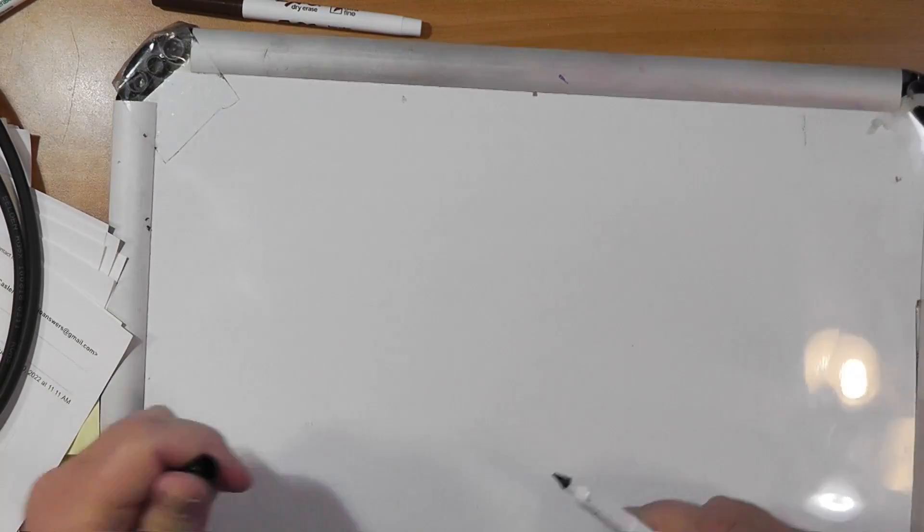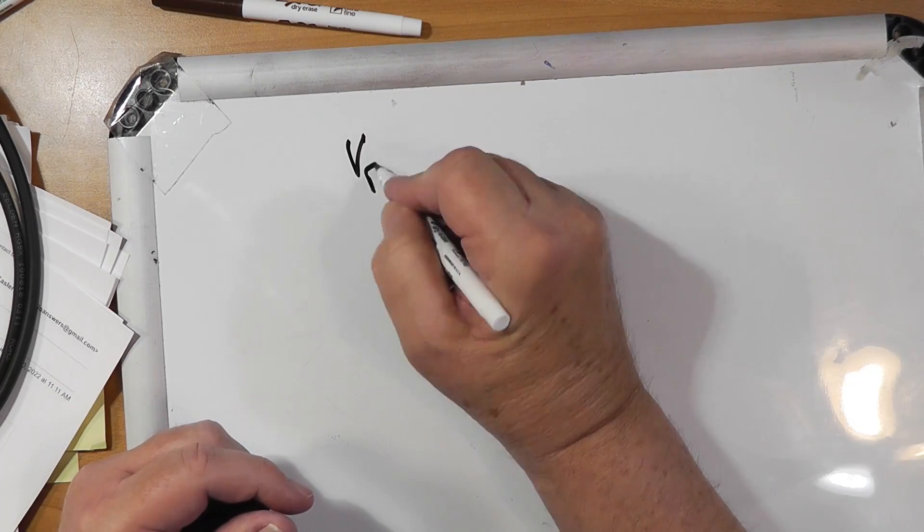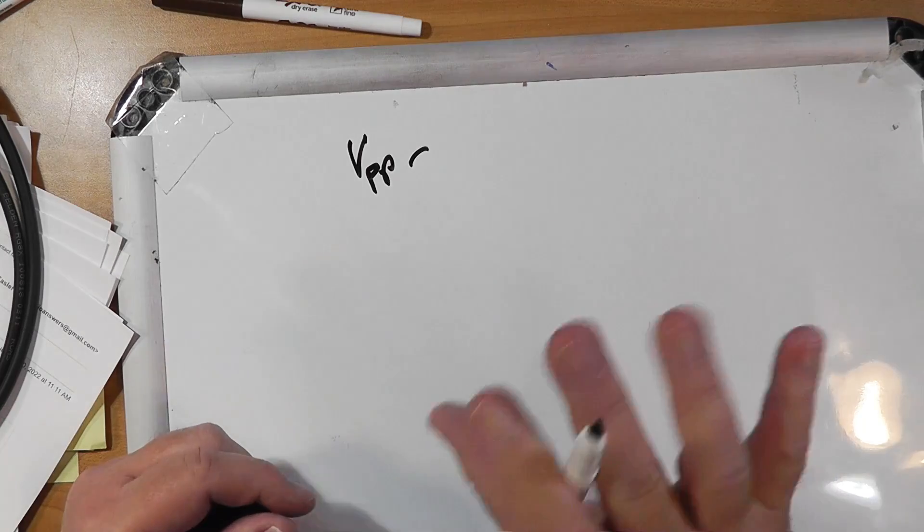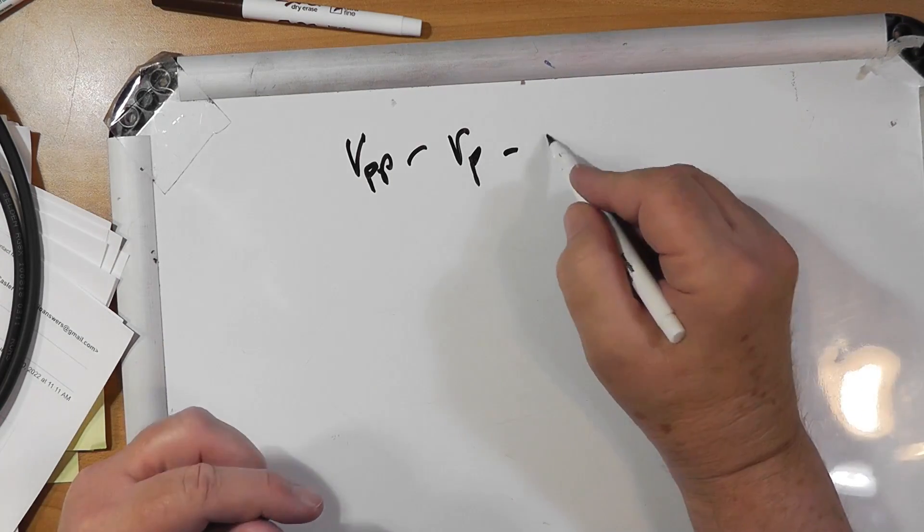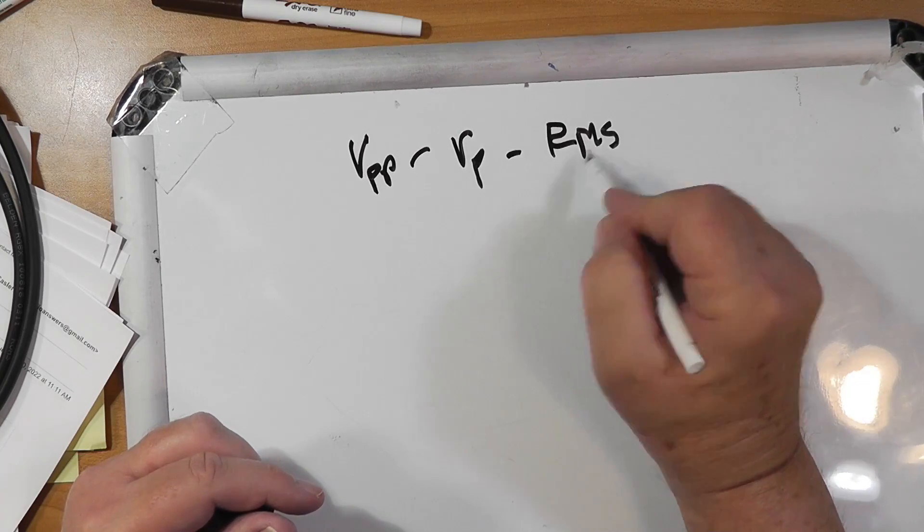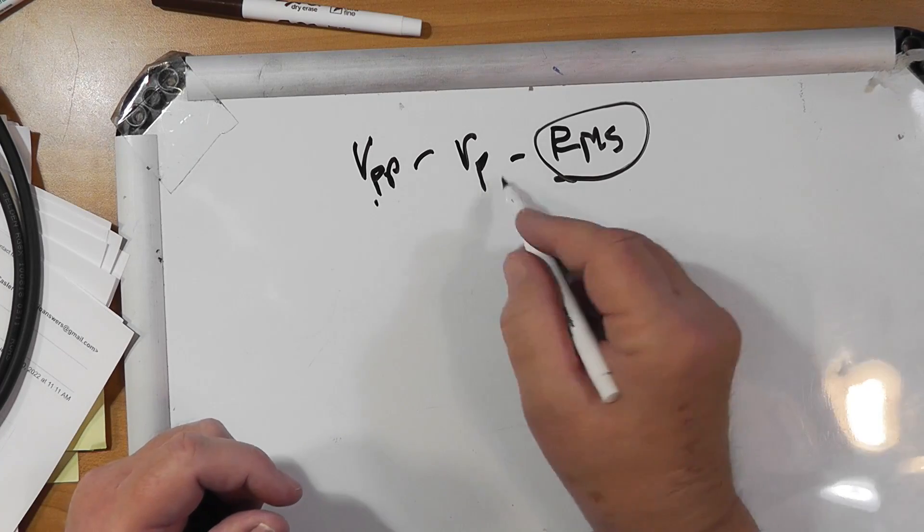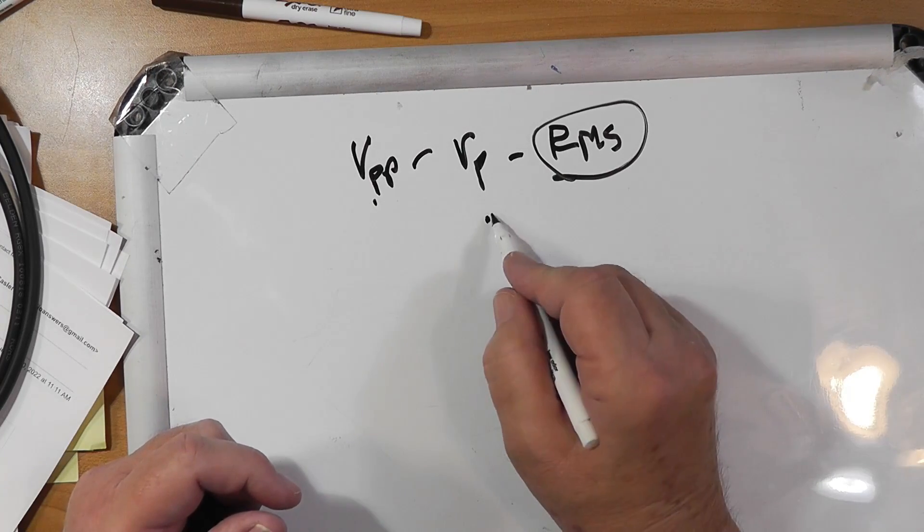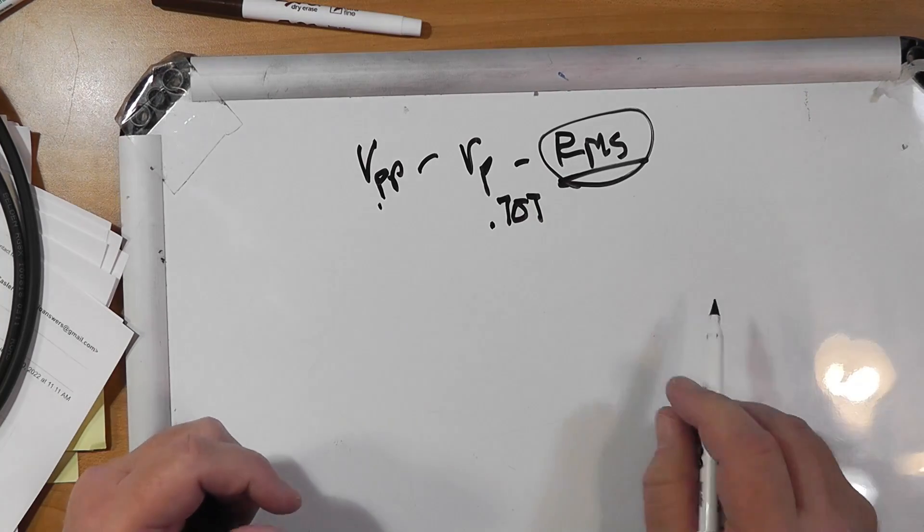Let's figure out how we would do it. What you get out of the oscilloscope is you can get the voltage peak to peak just by measuring it, looking at it, or the voltage peak. Sometimes it will give you the RMS voltage. What we're looking for is this. So if you have this, you divide it in two to get V peak. You take V peak and multiply it by 0.707 to get the RMS voltage.